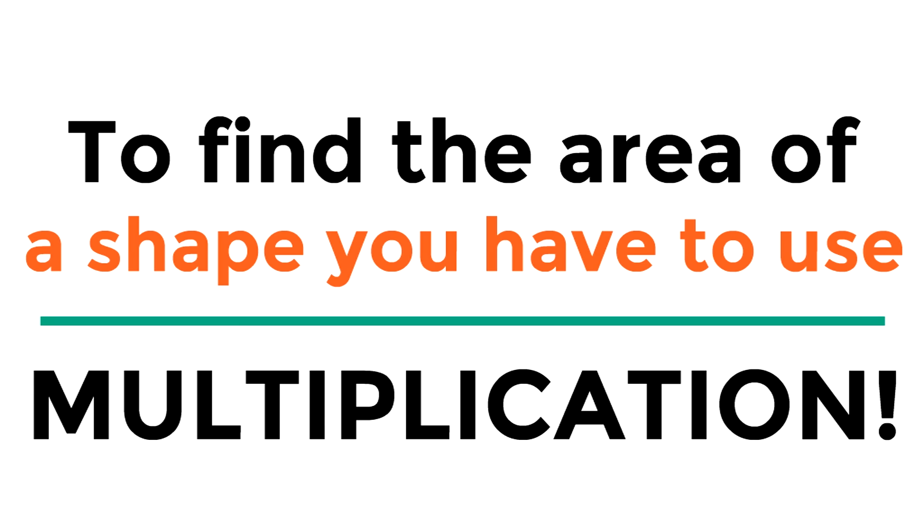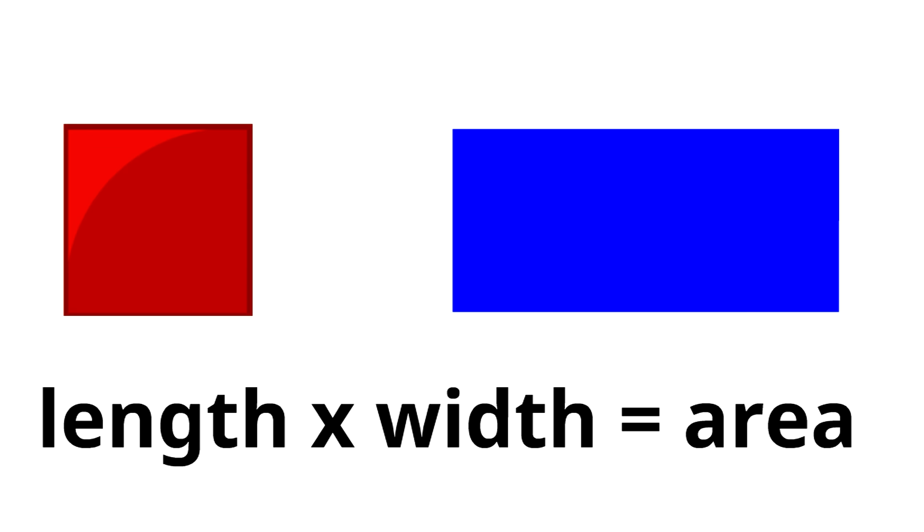So, how do you find the area of a square or a rectangle using multiplication? All you have to do is multiply the length times the width to get the area.